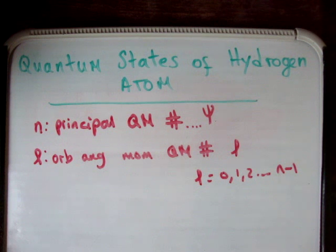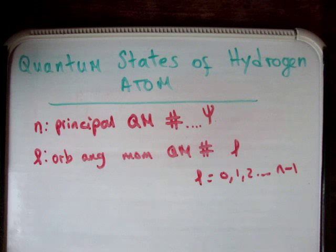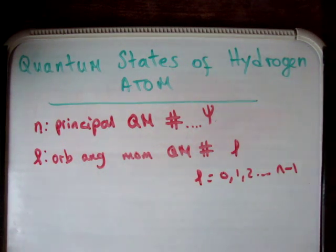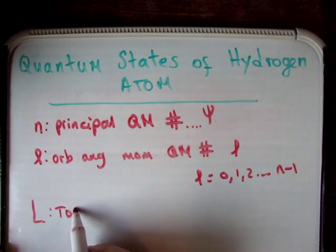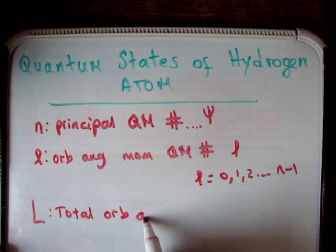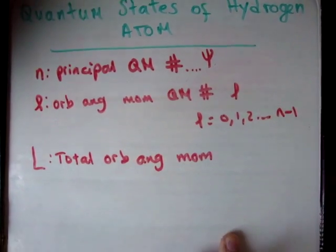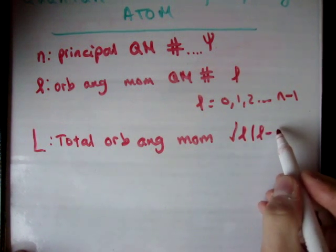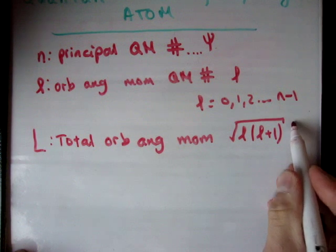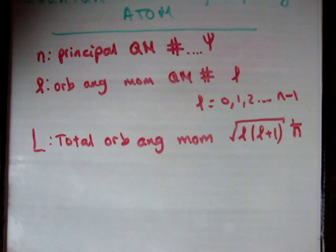We talk about orbital angular momentum because we consider the electrons to be orbiting around a nucleus — they're moving in the motion of a circle. The total orbital angular momentum L is defined as the square root of L times L plus 1, given in units of h-bar, which is Planck's constant over 2 pi.